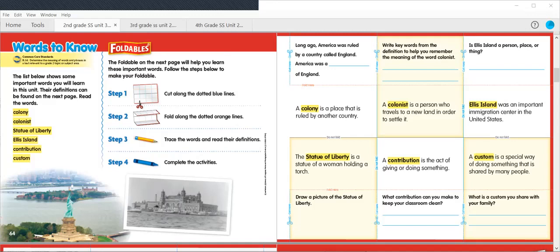Our next word is the word colonists. A colonist is a person who travels to a new land in order to settle it. Write key words from the definition to help you remember the meaning of the word colonists. So, over here, we're asking you to pull words out of the definition that's right under it. We're not asking you to make up your own words. So, what are the important words in this definition? I can see that the first important word is travels. And the next thing I might put in there is settle. So, someone who travels to a new land to settle there.